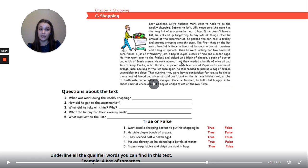He remembered that they needed a bottle of olive oil and tins of soup. Feeling a bit thirsty, he picked up a few cans of Pepsi and a carton of orange juice. Looking at the list once again, he still needed to pick up a bag of frozen vegetables and chips. That evening, they were having sandwiches for tea. So he chose a nice loaf of bread and slices of cold beef.